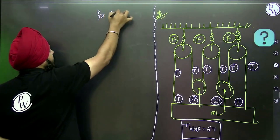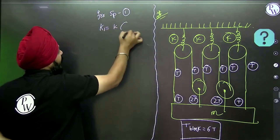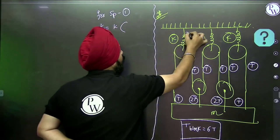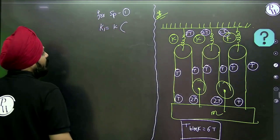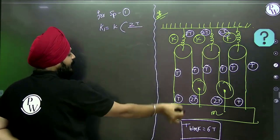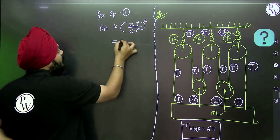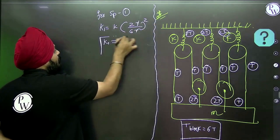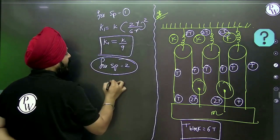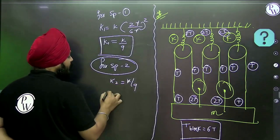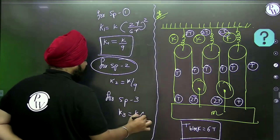For spring 1: K1 equals K × (tension on block / tension on spring)² equals K × (6T / 2T)² equals K × 9 — wait, it's K × (T_block/T_spring)² so that is K × (6T/2T)² — this cancels to give K by 9. For spring 2, the calculation is again K by 9. For spring 3, the calculation is again K by 9.